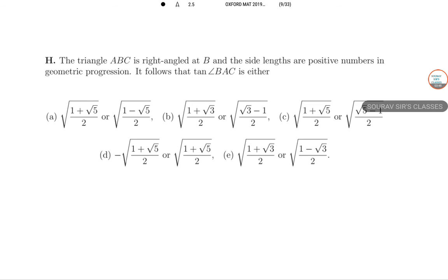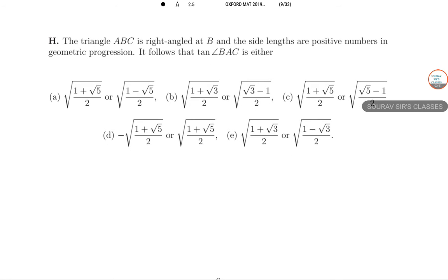H: The triangle ABC is right-angled at B and the side lengths are positive numbers in geometric progression. It follows that tan∠BAC is either of which of the following. The hypotenuse is the longest side we know. So the hypotenuse equals ar². A is positive, the shortest side, and r > 1.